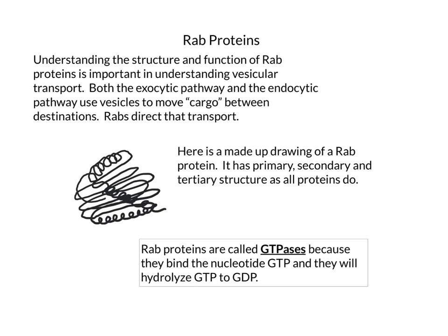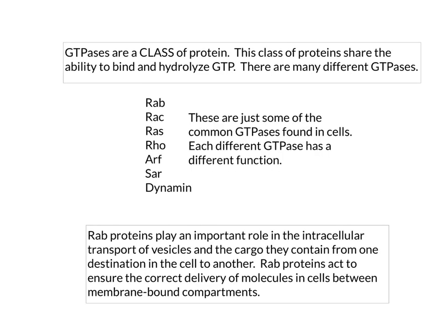RAB proteins are called GTPases, and that is because they bind the nucleotide GTP. They not only bind GTP, but they are also capable of hydrolyzing GTP to GDP. There are a lot of GTPases in cells — GTPases are just a class of proteins that will bind GTP and be able to hydrolyze GTP into GDP.